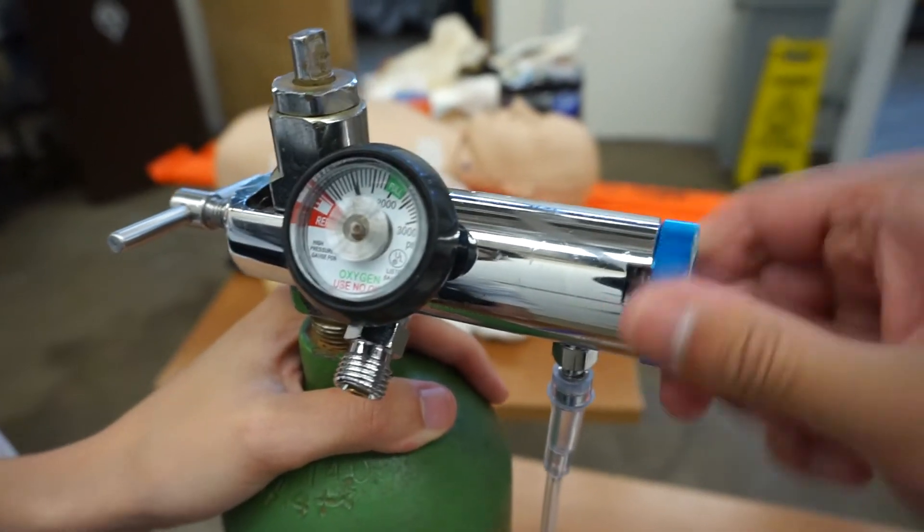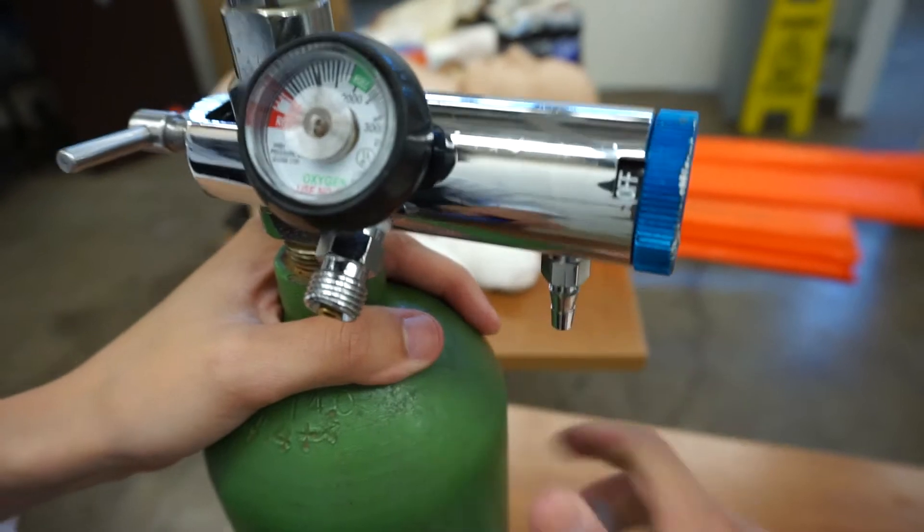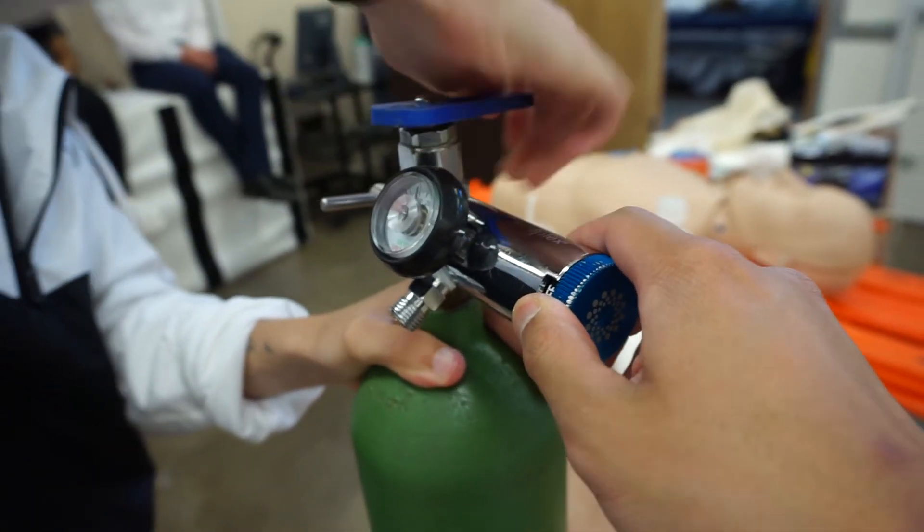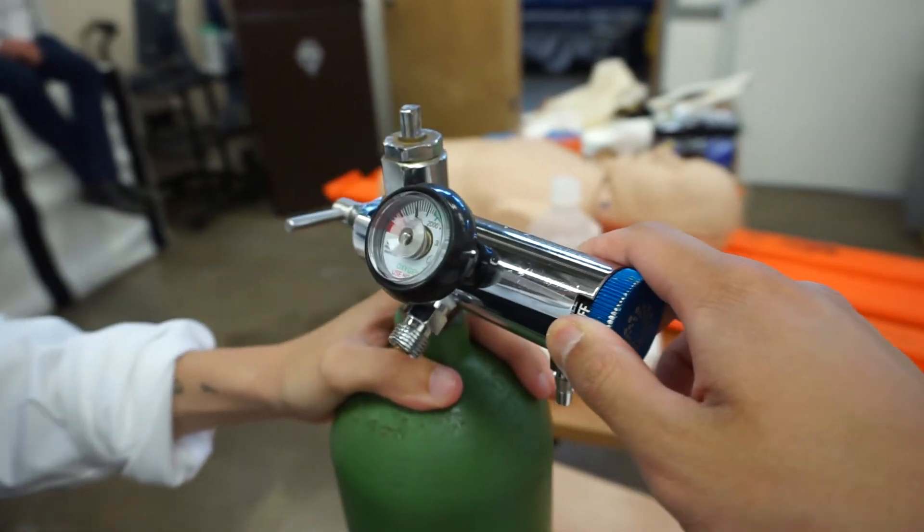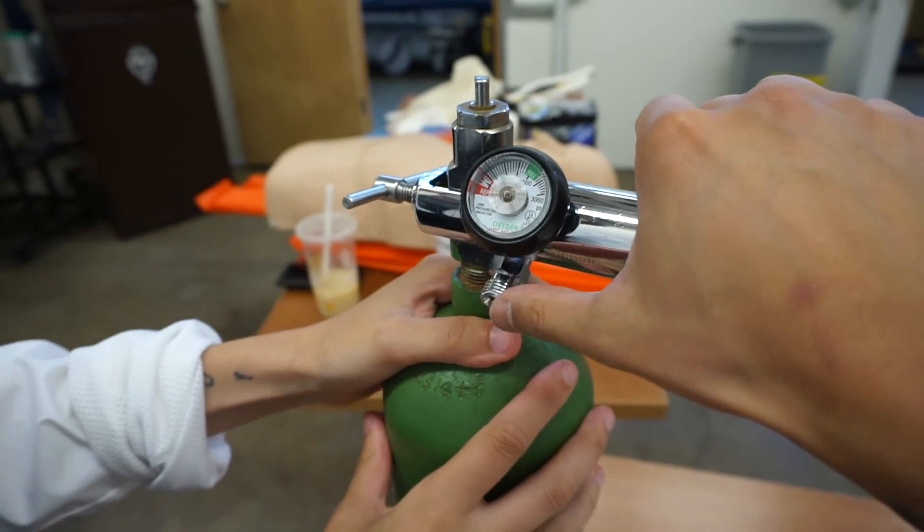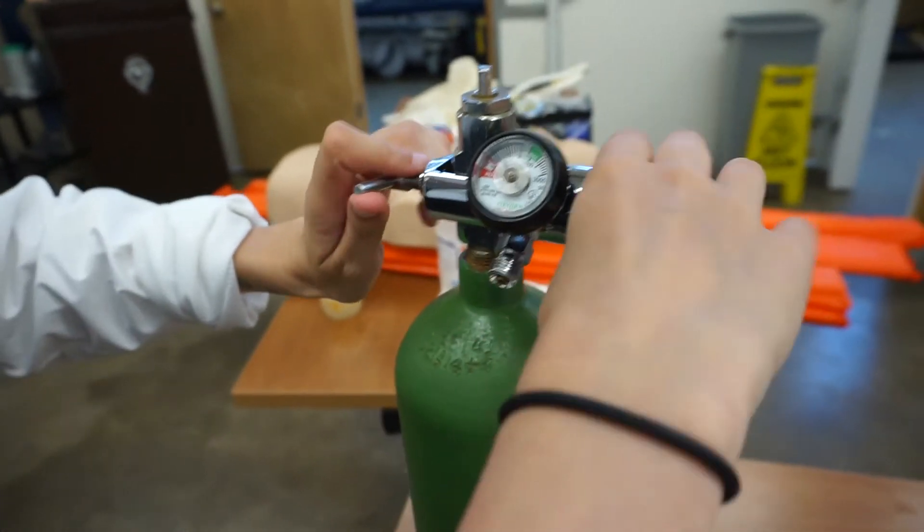Alright. And after you're done, you want to close the flow, and then you're going to lock the tank, so righty tighty. And then if you want, you can depressurize the tank by applying your finger into that quick connect spot, and then go ahead and undo the regulator.